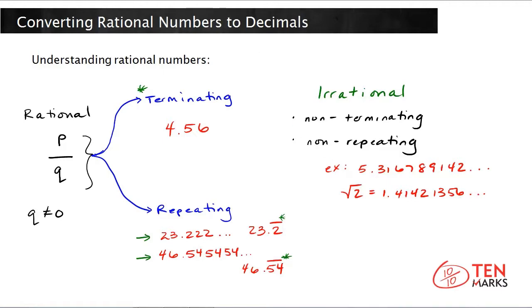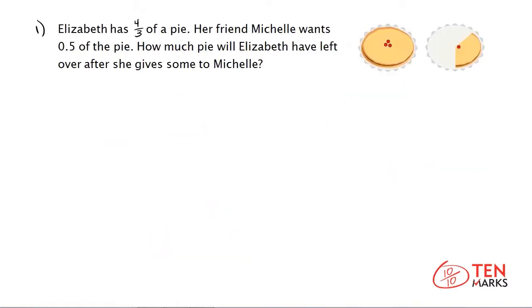Now that we've reviewed rational numbers and the difference between irrational and rational, let's practice with some problems. Elizabeth has 4 thirds of a pie. Her friend Michelle wants 5 tenths of the pie, or 0.5. How much pie will Elizabeth have left over if she gives some to Michelle? What's left can be found using subtraction: take the total amount, 4 thirds, and subtract away the amount Michelle wants, which is 0.5 or 5 tenths.